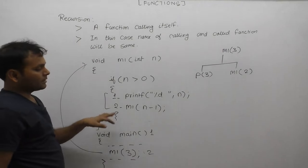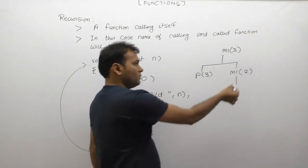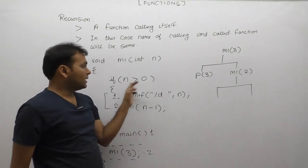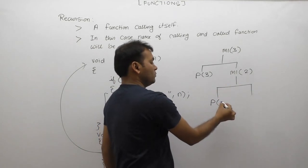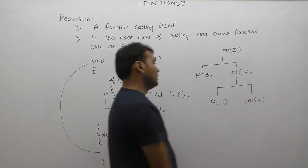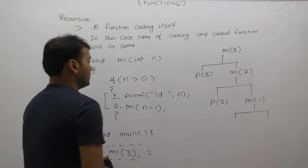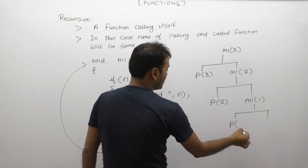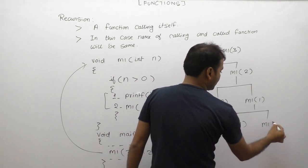For m1(2), again two statements need to be processed because value 2 is greater than 0, condition true. First case: print tab, value passed is 2. Then calling m1 with 2 minus 1, which is 1. For m1(1): n value is 1, 1 greater than 0, condition true, so two statements: print tab with value 1, then calling m1 with 1 minus 1, which is 0. For m1(0): 0 greater than 0 is false, no further processing needed.